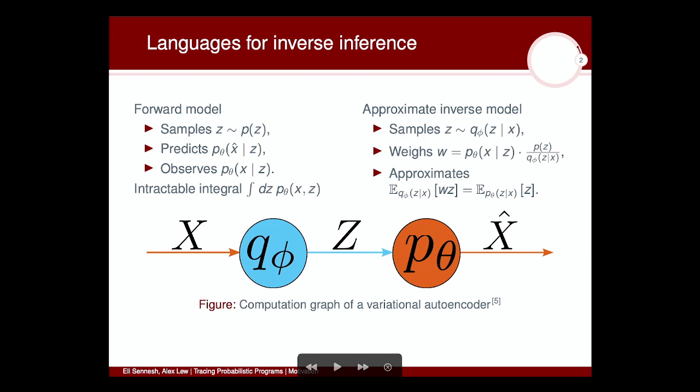In practice, the computation graph often looks like this, where we're feeding in data, we get out samples for the unobserved variables, we feed those back into the generative model in order to score them and generate predictions. The particular example chosen here is a variational autoencoder because it's the simplest case in which we tend to apply what we're now calling amortized inference.